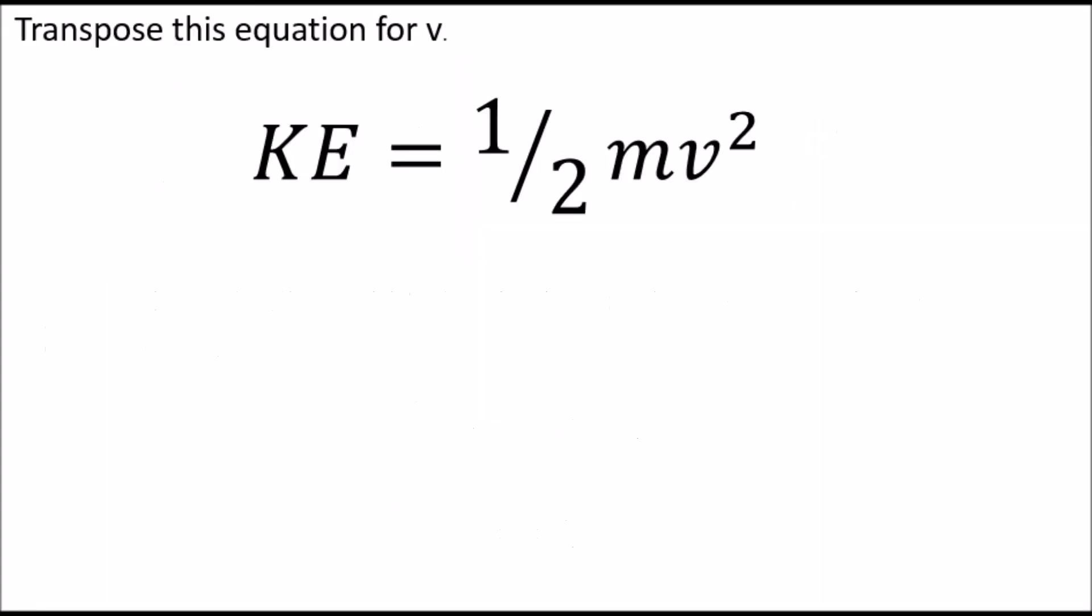The exam board might be a bit nasty at some point and ask you to find v, find the speed that this thing's going at, the velocity it's going at. Transpose the equation for v. Okay. Let's go through this. First of all, let's get rid of that horrible fraction. We've got a half mv squared. Now, the way you get rid of a half is to multiply it by two. So multiply both sides by two, so we get two kinetic energy, 2KE, is equal to mv squared. Multiplying a half by two gives you a whole, gives you a one, so we get this. We get 2KE equals mv squared. That's that fraction gone.